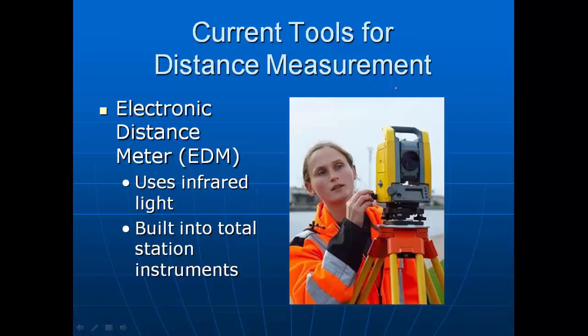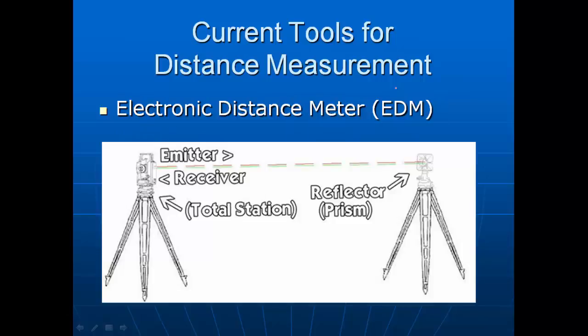Another tool you will use in this course is the electronic distance meter, a component built into a total station. The instrument on the tripod in the image is called a total station, and one of its integral components is an electronic distance meter. Most use infrared light — light not on the visible spectrum. An infrared signal leaves the emitter in the instrument, travels to a reflector, and the reflector bounces it back to the instrument where a receiver collects that energy — measuring the distance from the total station to the reflector.